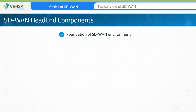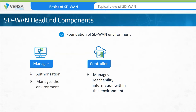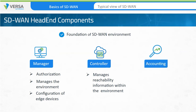The head-end components consist of: the control component, which manages the reachability information within the SD-WAN environment; the management component, which authorizes devices, provides management of the environment, and configuration of the edge devices. And although not always present, a mature SD-WAN environment will include a logging or accounting component, which keeps track of network performance and functions within the environment.